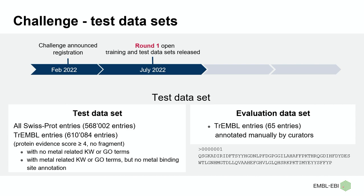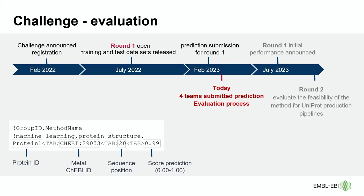The dataset is provided in FASTA format with a numerical identifier as the header. In February of this year, the first round closed and participants submitted their predictions. So far, four teams have submitted predictions, and we are currently running the evaluation process. We hope to announce performance results in July, and later we will evaluate the feasibility of the selected methods for UniProt production pipelines.